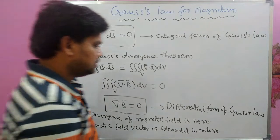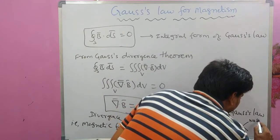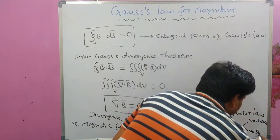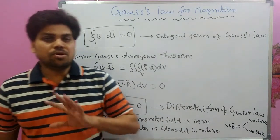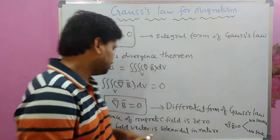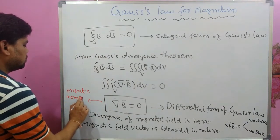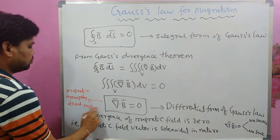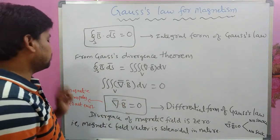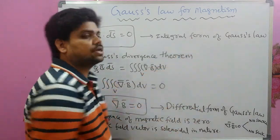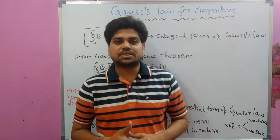The divergence being zero (∇⃗ · B⃗ = 0) means no source and no sink, confirming that magnetic monopoles do not exist. The magnetic field lines form closed loops, the magnetic field is solenoidal in nature, and magnetic monopoles do not exist. This is the differential form of Gauss's Law, and the integral form is ∮ B⃗ · dS⃗ = 0. If you have any doubts, please put them in the comment section. Thank you very much.